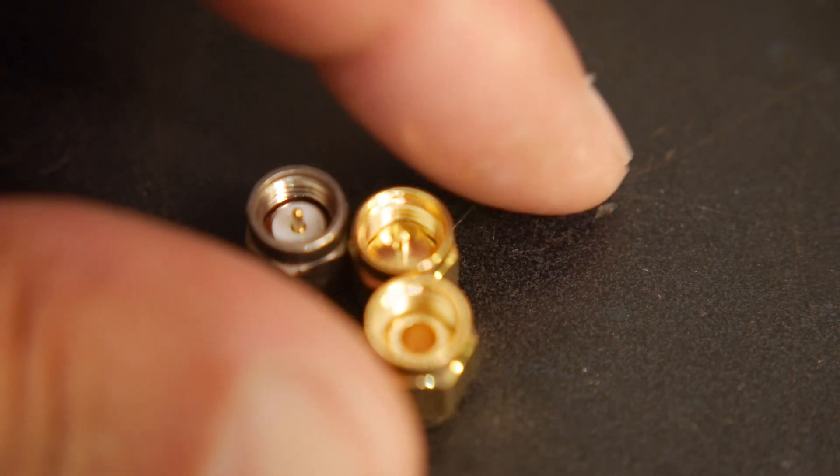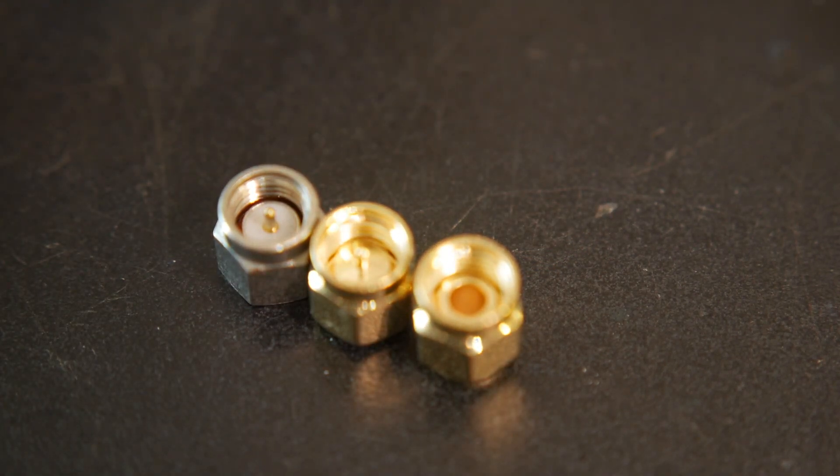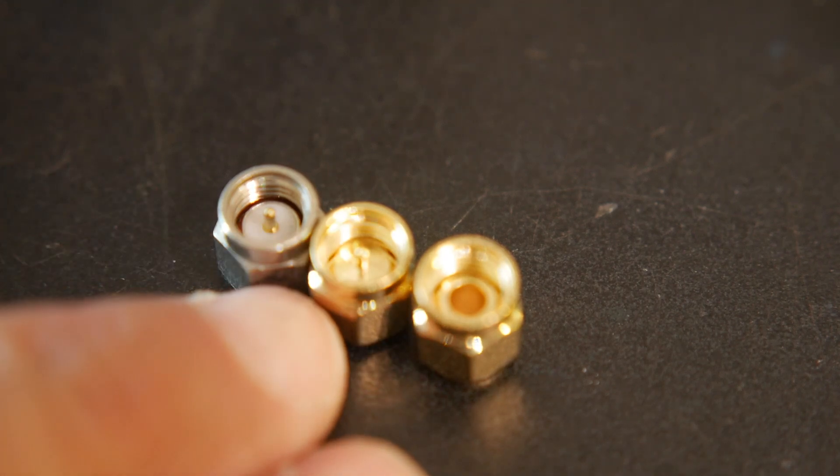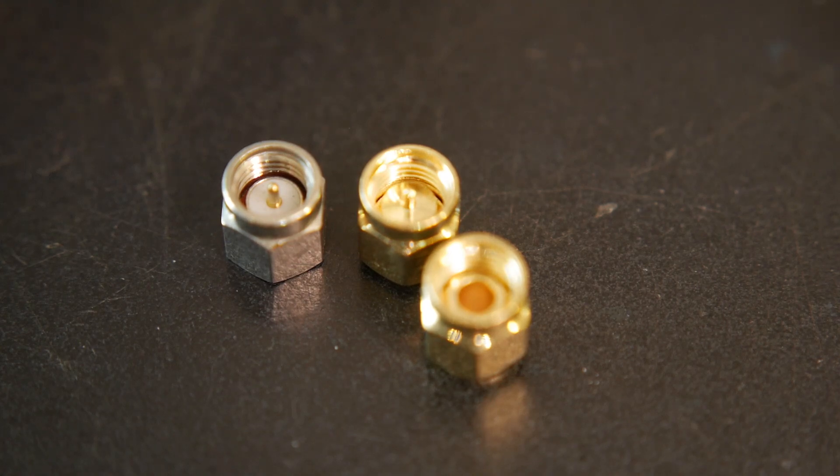The real trick to these guys is that if you look at vector network analyzer cal standards, these cal standards can go anywhere from $5,000 to $10,000 just for these three components. And why they're so expensive is they're made to very, very exacting mechanical specifications.